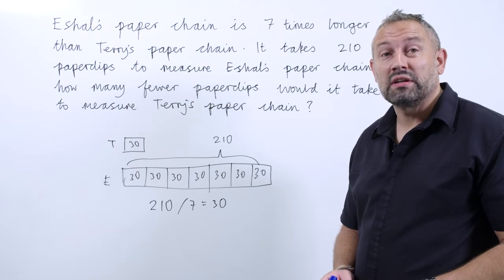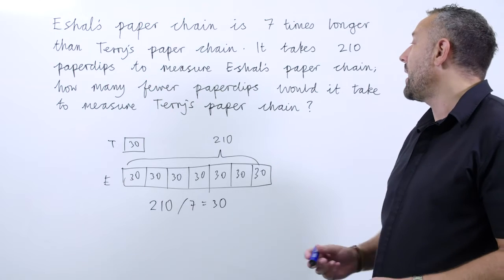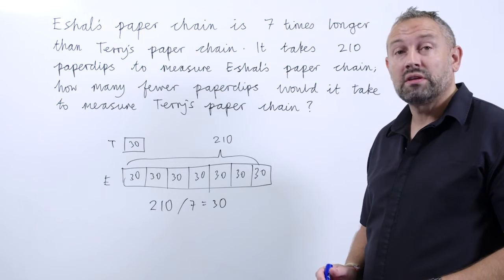Now we have to come back to the question. This is the final stage and it's really important. How many fewer paper clips would it take to measure Terry's paper chain?